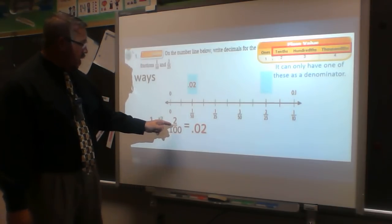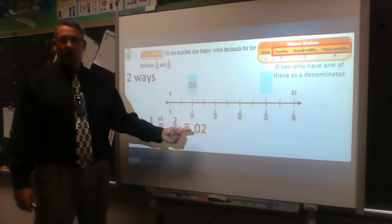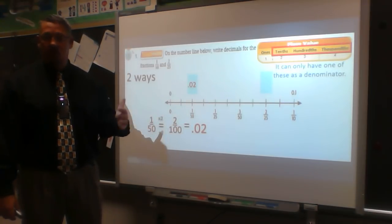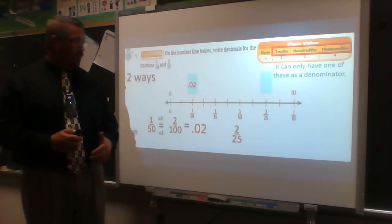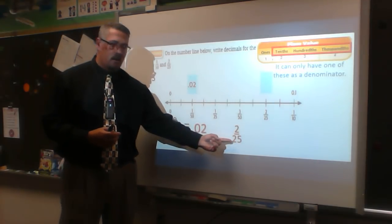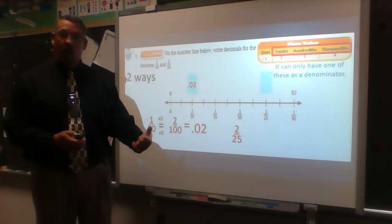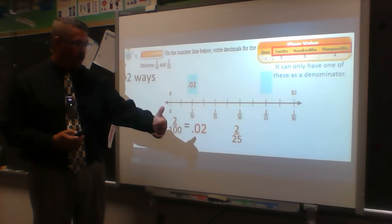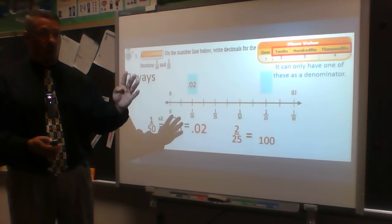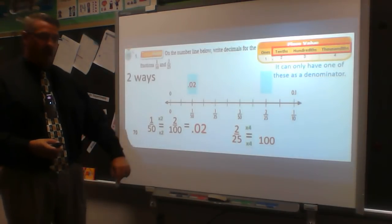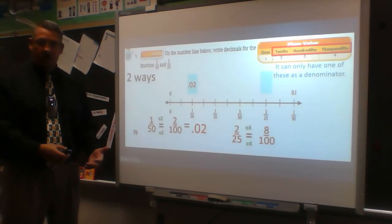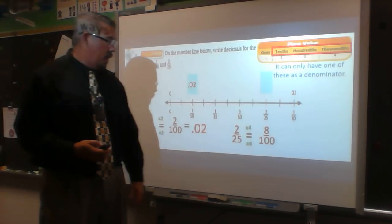Two hundredths as a decimal: the hundredths position is two decimal places out, so it's 0.02 — two hundredths. For two twenty-fifths: I need a denominator of 10 or 100. I can't use 10, but 25 goes into 100 evenly — think quarters, four of them make a dollar. So I multiply 25 by 4 to get 100, and multiply the numerator 2 by 4 to get 8. Eight hundredths as a decimal is 0.08.